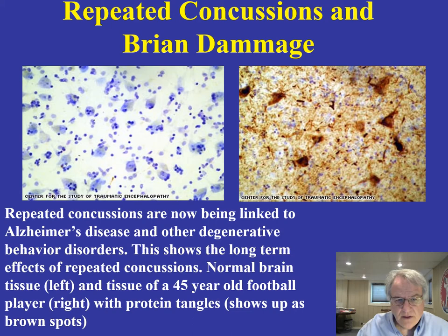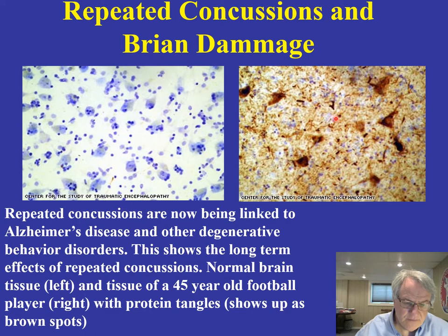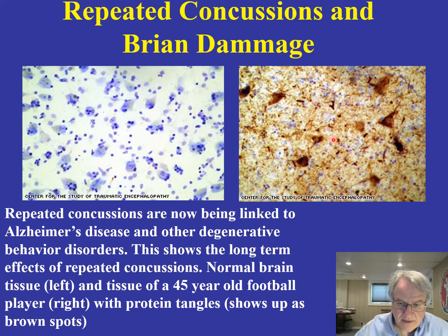If you take a look at this figure, this shows a normal brain on one side and the brain of a football player who played the sport for a number of years on the other. These are the abnormal tau protein deposits you see here. Contrast and compare the two — you see very pronounced differences in terms of the tissue in the brain and these abnormal protein tangles.